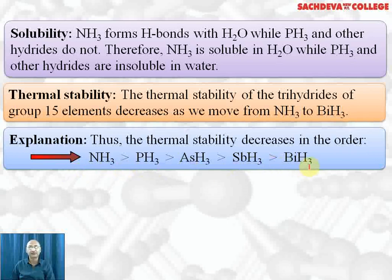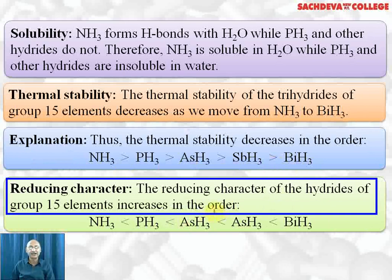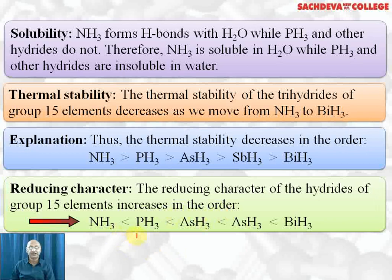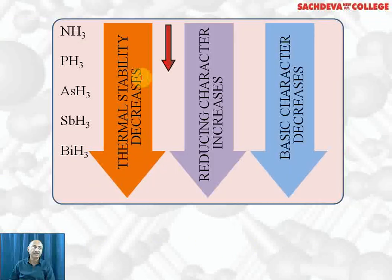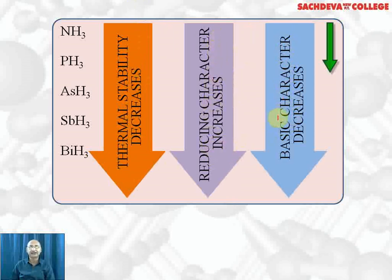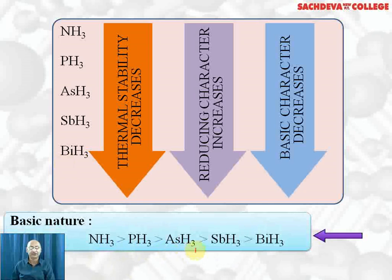Ammonia is most thermally stable; bismuthine is least thermally stable. Reducing character of hydrides of group 15 increases down the group for the same reason — decrease in bond dissociation energy. Bismuthine is the strongest reducing agent. Basic character decreases down the group because the lone pair of electrons is readily available on nitrogen (smaller size) but least available on bismuth (larger size), and electronegativity also decreases down the group. Order: NH₃ > PH₃ > AsH₃ > SbH₃ > BiH₃.